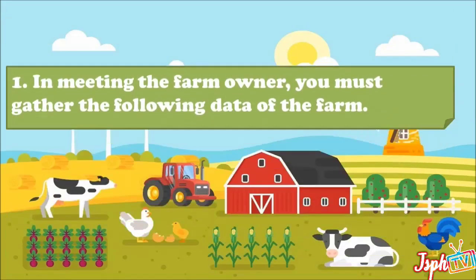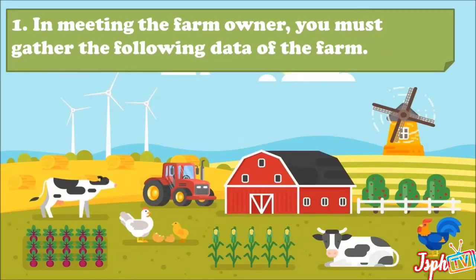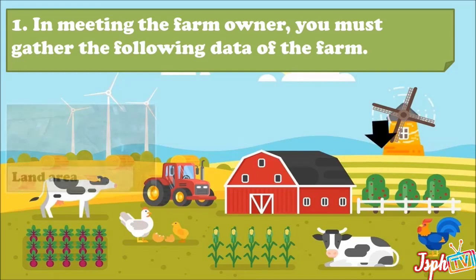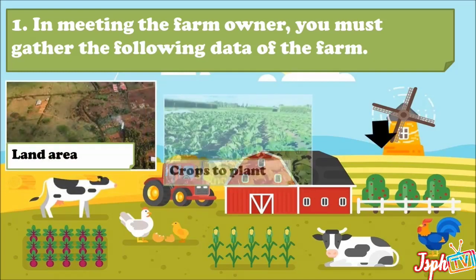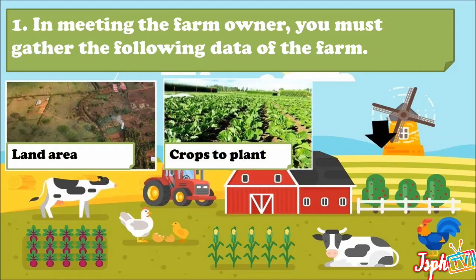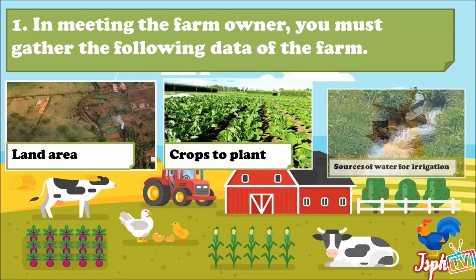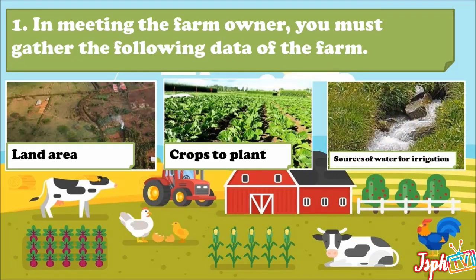When meeting the farm owner, you must gather the following data of the farm: land area, crops to plant, sources of water for irrigation, and available farm tools and equipment.